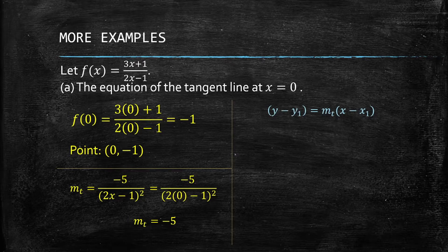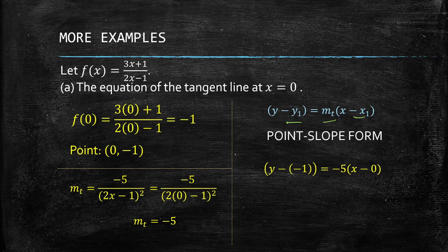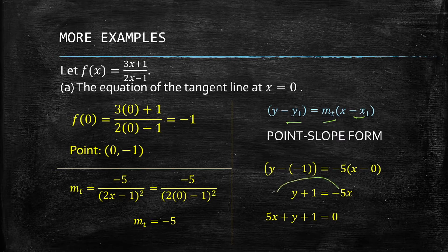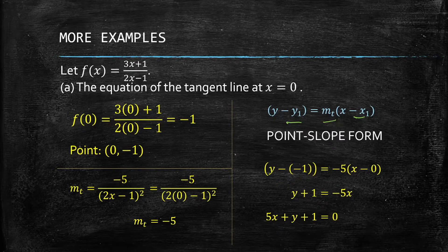We apply the point-slope formula. We now have the value of x, the value of y, and the value of the slope. Substituting those values and simplifying gives us y + 1 = -5x. Writing this in the general form of a line, we have 5x + y + 1 = 0. We simply apply the property of equality to bring 5x to the other side. That is the equation of the tangent line.